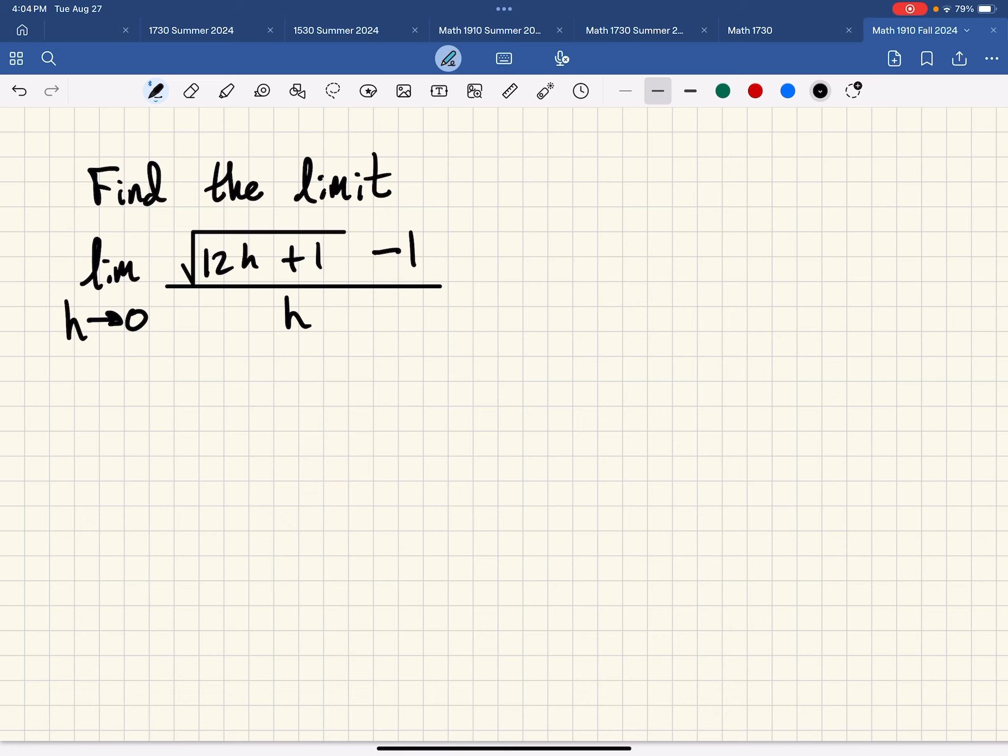So we have to think of a way that we could possibly eliminate that h in the denominator. And in order to do that we would need to establish a factor in the numerator that contained an h so that we could cancel them out.